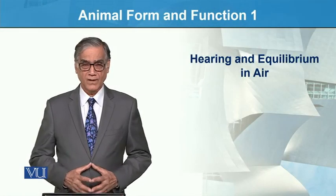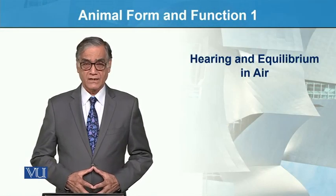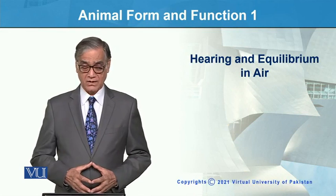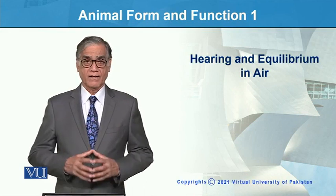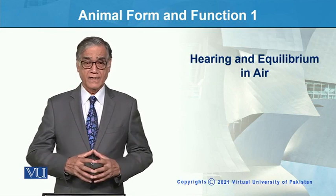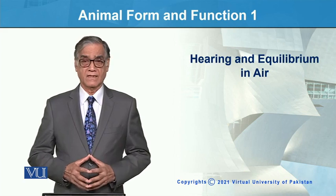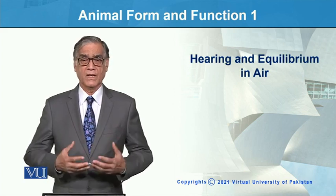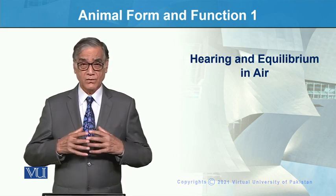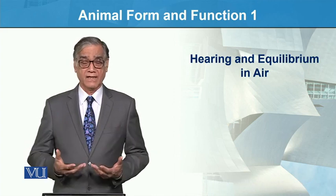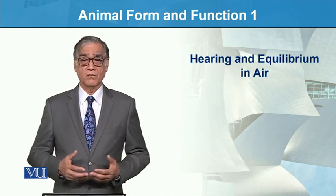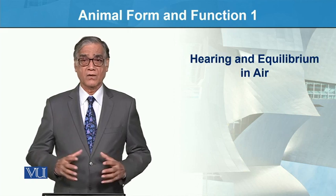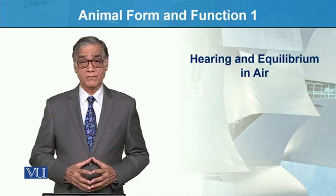Animal Form and Function 1. This next module is Hearing and Equilibrium in Air — that means those animals which are aerial, or air-breathing — which process hearing and equilibrium.